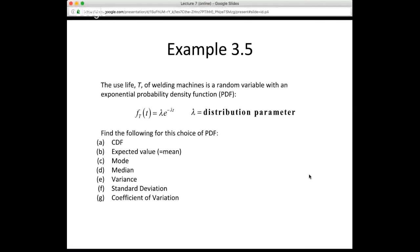So I left you with example 3.5 at the end of lecture, and the problem statement looked like this. The useful life T — capital T — of welding machines is a random variable with an exponential probability density function, or PDF.